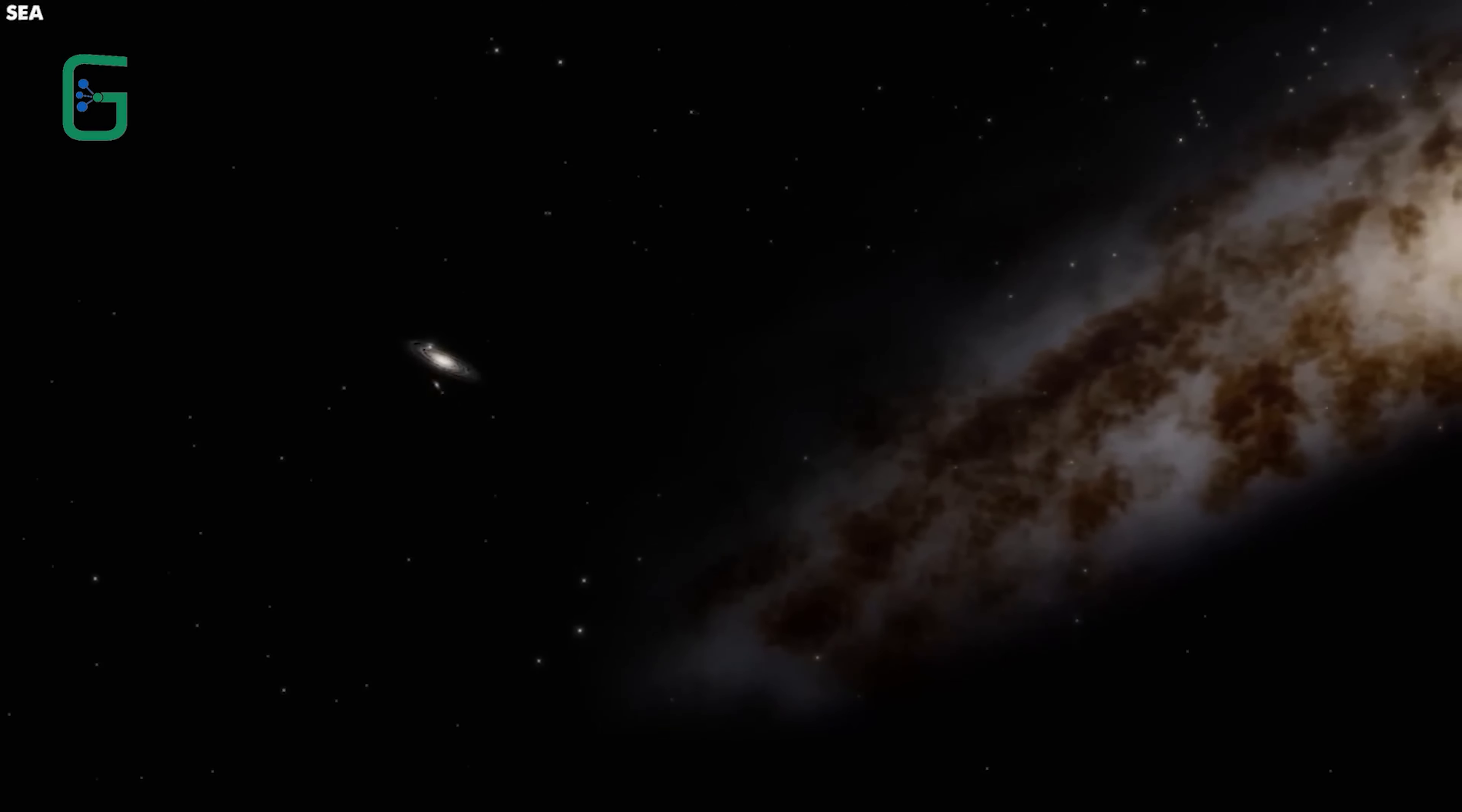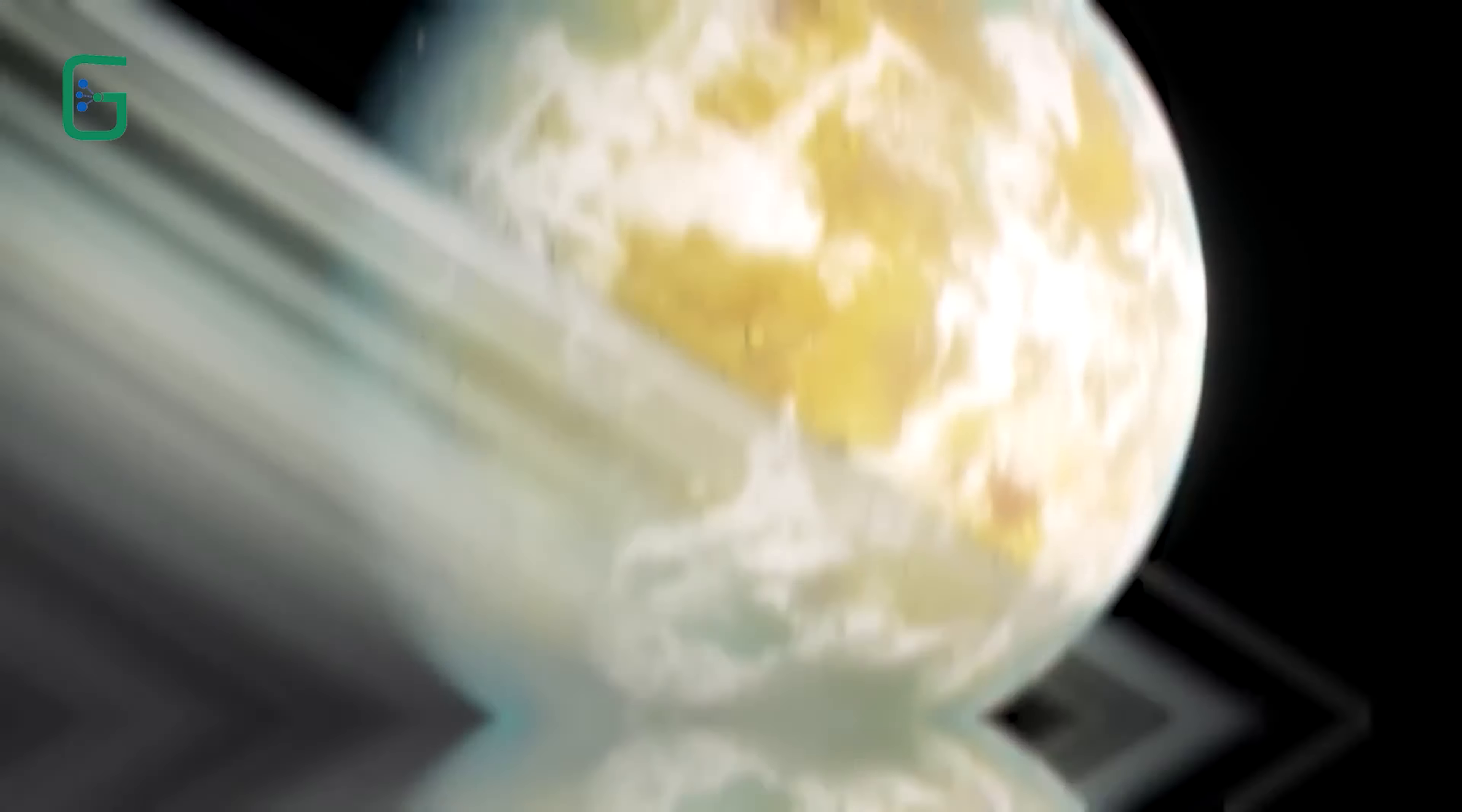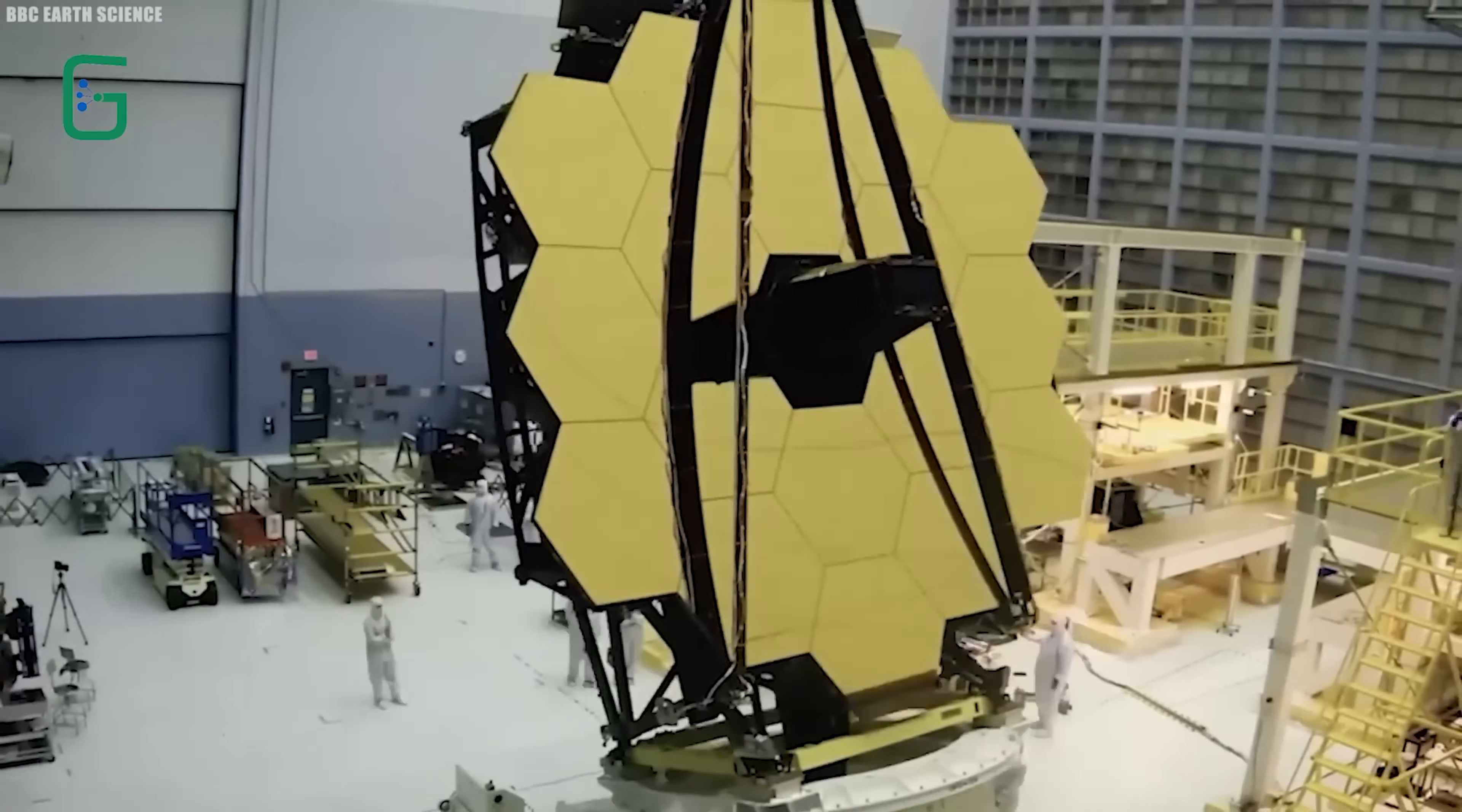One of the big discoveries is that Andromeda might not be as big as they thought. Before, they thought it was way bigger than our Milky Way, but now with new measurements, it looks like they're more similar in size. This changes everything about how they see our galaxy in the big galactic neighborhood.